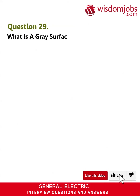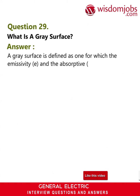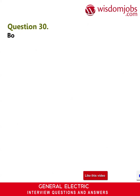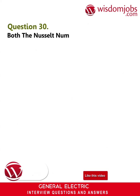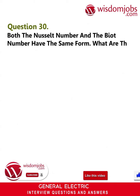Question 29: What is a gray surface? Answer: A gray surface is defined as one for which the emissivity ε and the absorptivity α are independent of wavelength λ.